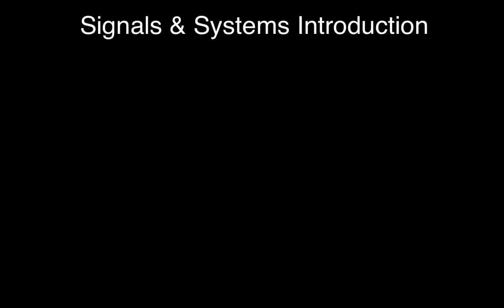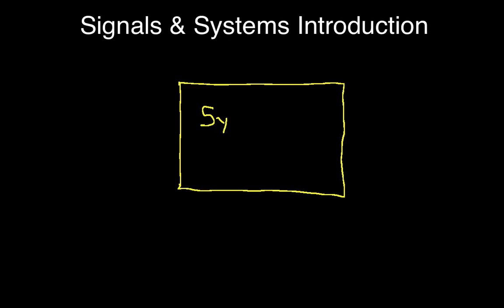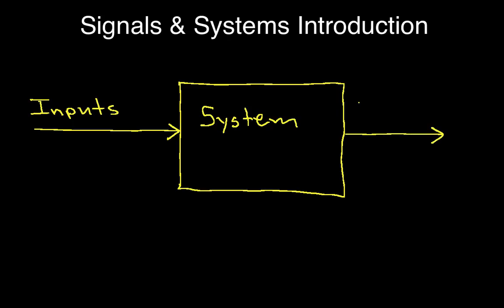To begin with, we usually think abstractly of a system in this way. We think of it as a box. Going into the box, we have things that we call inputs, and coming out of the box, we have things we would call outputs. The idea is to come up with a way of representing the inputs, the system, and the outputs so that we can make general statements about generalized systems.